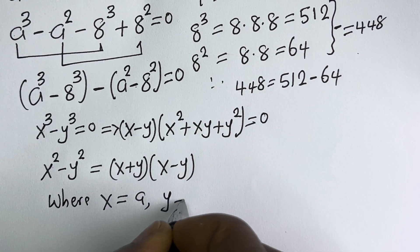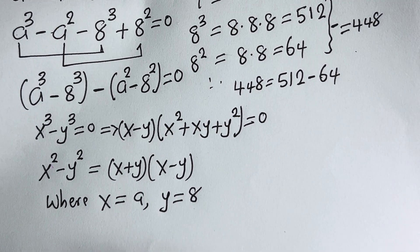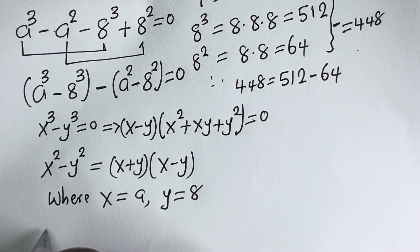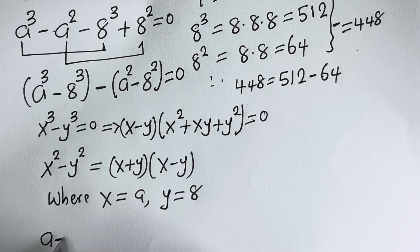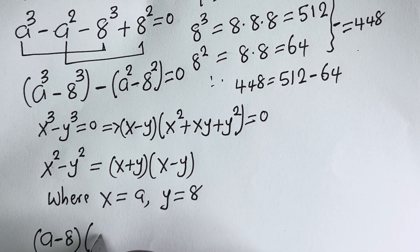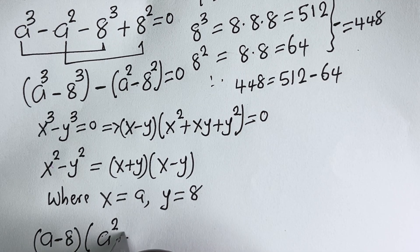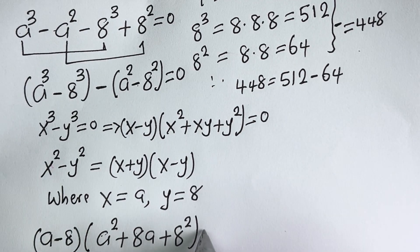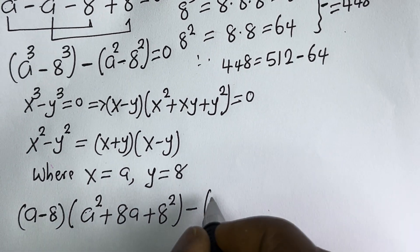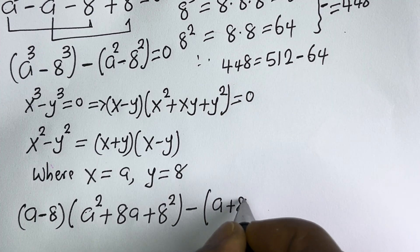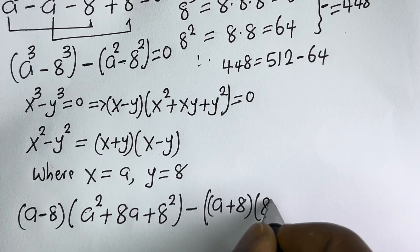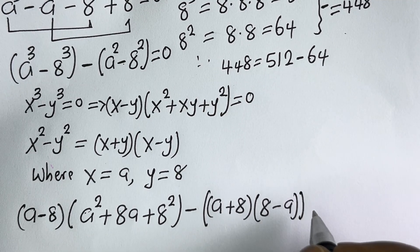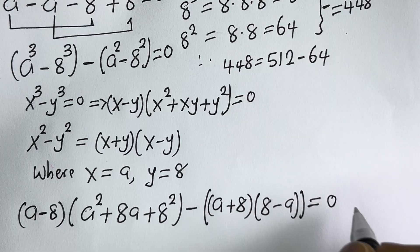Now where s is equal to A and y is equal to 8, this can be written as (A minus 8)(A² plus 8A plus 64) minus (A plus 8)(A minus 8) equals 0.